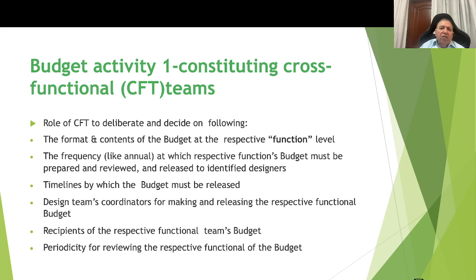Activity number one: forming the cross-functional team (CFT). This should usually be done by the CEO or MD of the company. The purpose and role of the CFT will include: deciding the format and contents of the budget at the respective function level; frequency — annual or six-monthly — at which the respective function budget must be prepared, reviewed, and released; timelines by which the budget must be released; design team coordination for making and releasing respective functional budgets; recipients of the respective functional team's budget; and periodicity for reviewing the respective functional budget. This activity is common across all functions.